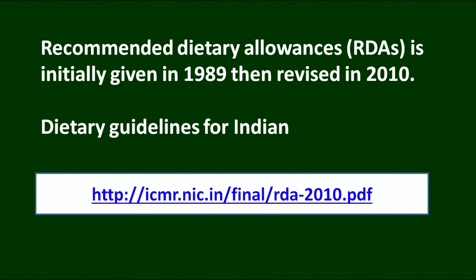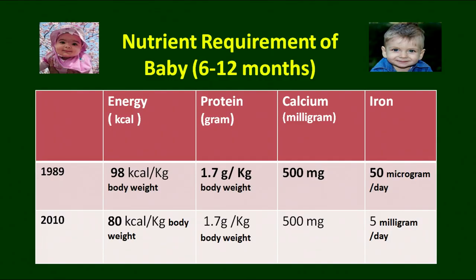After a long gap, they were revised in 2010 and are available on the relevant website and in the book 'Dietary Guidelines for Indians.' We will talk about some of the important age groups and their nutritional requirements. In the table, you will find that RDAs are given for 1989, which is also in the senior secondary level book, and the updated version is given in the lower line.